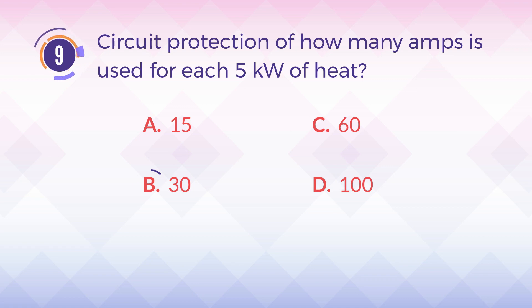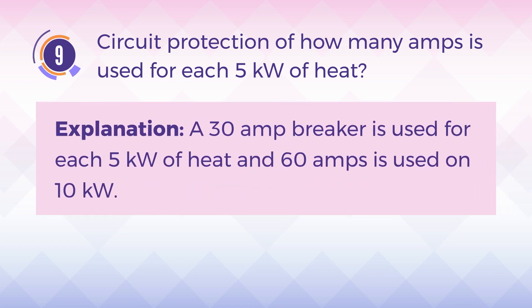The answer is B, 30. Explanation: A 30-amp breaker is used for each 5 kilowatt of heat, and 60 amps is used on 10 kilowatt.